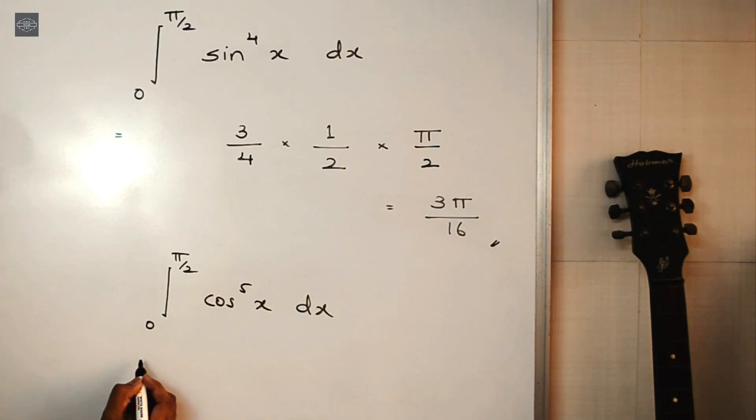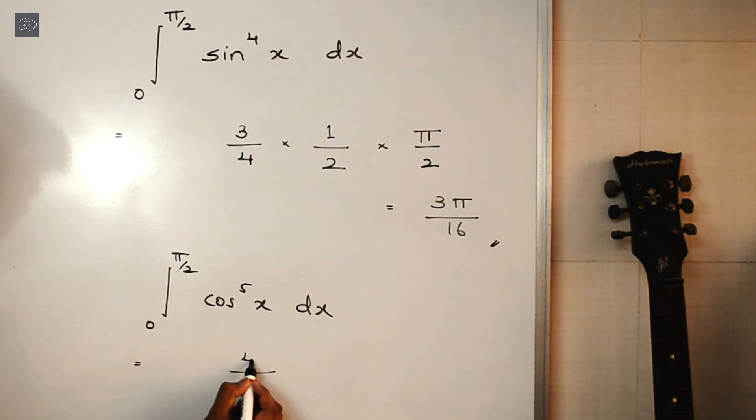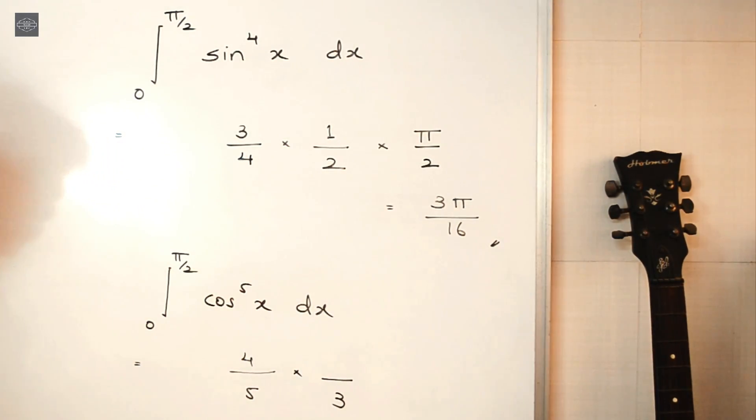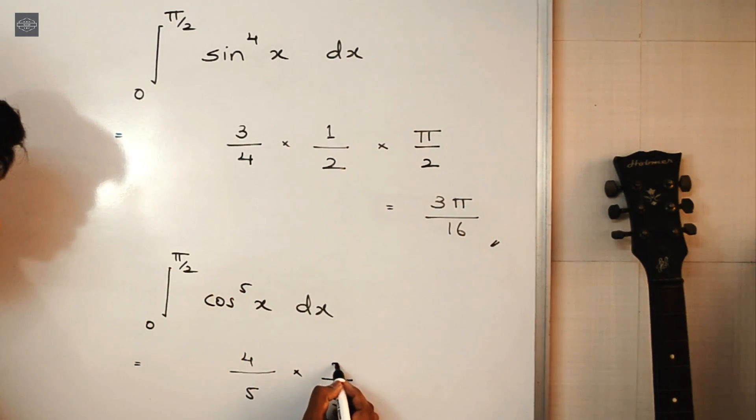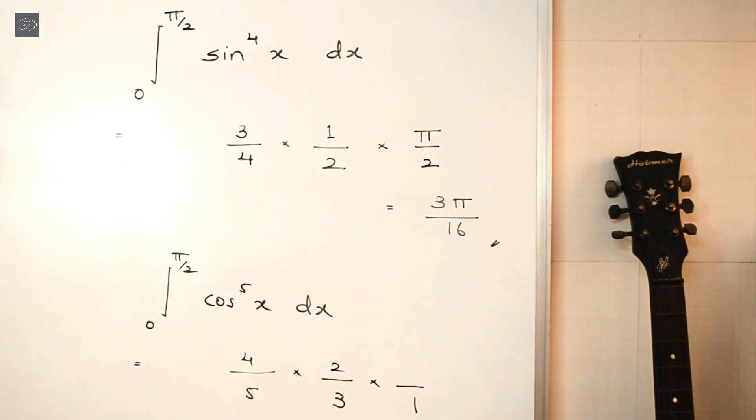So on similar lines, let's quickly solve this one as well. This is integral 0 to π/2, cos to the 5x dx. So here the power is 5. First write 5 below. Now one number less than 5, it is 4, write 4 here. One number less than 4, it is 3, write 3 below. One number less than 3, it is 2, into one number less than 2, it is 1, and stop at 1.